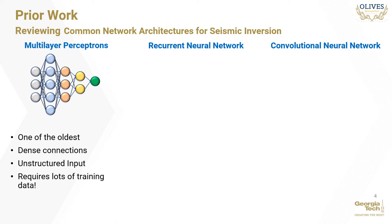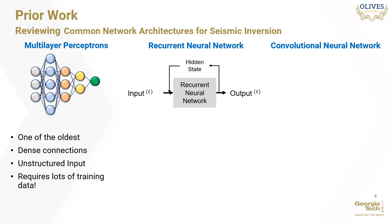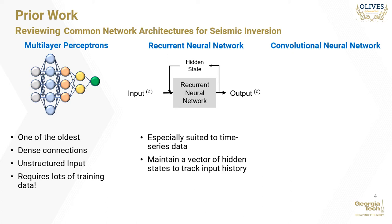MLPs also require lots of training data to generalize well and are very prone to overfitting. The next architecture we review is the recurrent neural network, also called RNN. RNNs fall into a family of machine learning algorithms called sequence models. They are especially suited to time series data where there is a temporal relationship between successive data points. RNNs feature extensively in machine translation and speech recognition, making them ideal for working with seismic traces and well logs that are also sequences. They maintain a vector of hidden states to keep track of past inputs and share parameters across all time steps to prevent overfitting.